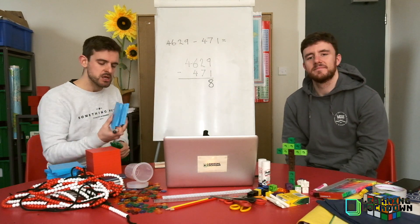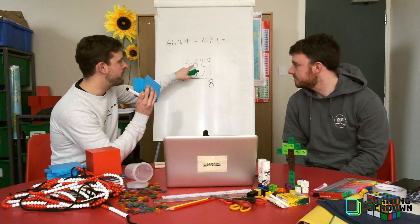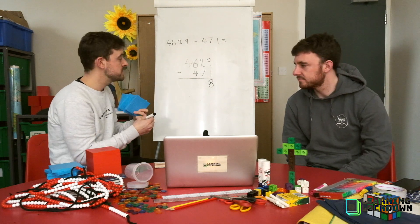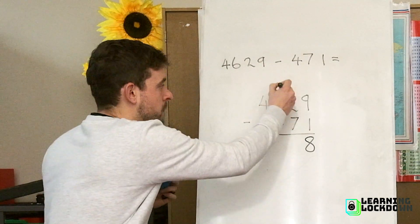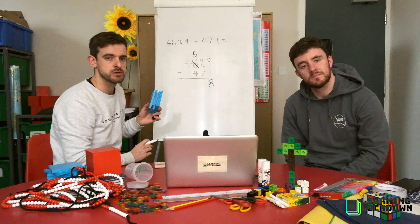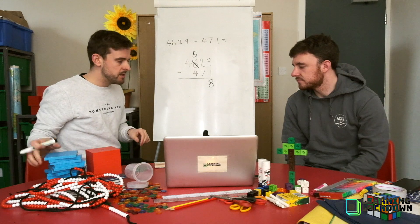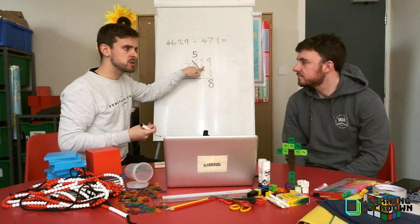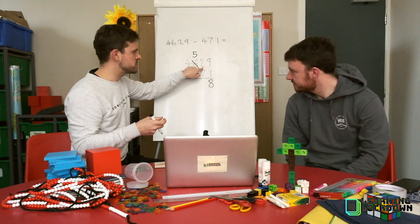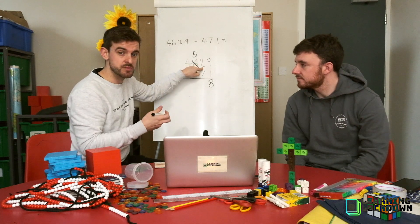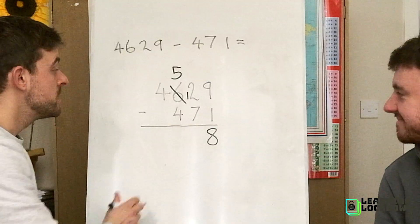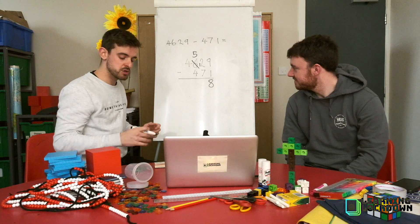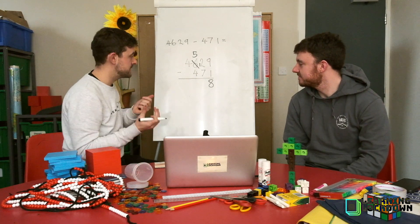And we've got the 10 lots of 100. So how many hundreds are we left with now, though? If we've borrowed, if we've regrouped from this hundreds column, how many hundreds are we left with? Well, we're left with 5. So we cross out our 6 and we recognise that we've got 5 lots of 100 now because we've regrouped one of them. But we've just been given 10 new tens. So this 2 lots of 10 doesn't turn to 3 lots of 10 because we've been given 10 lots of 10. So we've now got the 2 lots of 10 here plus the 10 lots of 10 we've just been given. And that becomes 12 lots of 10. So we write our little 1 there to show that we've now got 12 lots of 10.